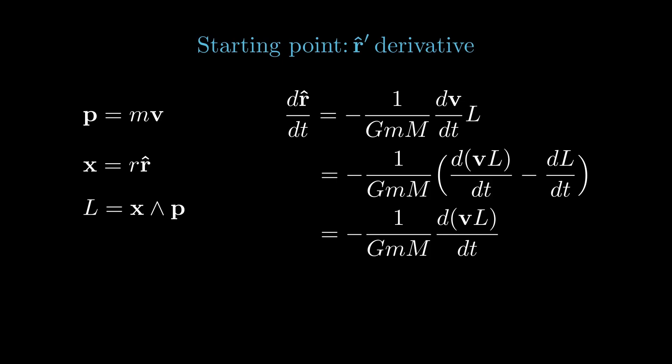We're left with d r hat dt equals minus one over gmm times d dt of vl. This is a perfect derivative equation, allowing us to integrate immediately, finding r hat equals minus one over gmm times vl minus a vector constant e. We use a negative vector constant here for convenience, knowing what's to come.